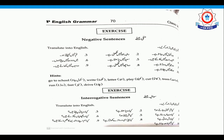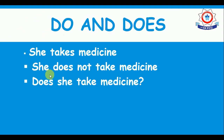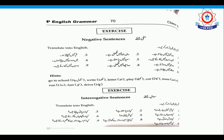One thing we skipped: whenever you are using 'does', the S from the verb shifts to 'do', making it 'does', and S is removed from the verb. For example: 'She does not take medicine. Does she take medicine?' — 'take' is used, not 'takes'. Similarly: 'Does he read?' — 'reads' will not come, 'read' will come. In this way you will do these sentences.